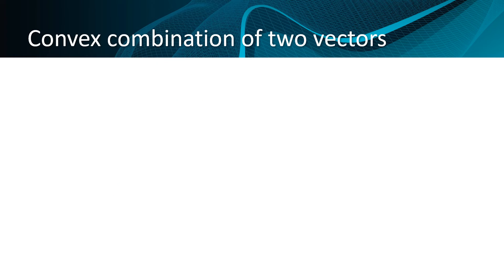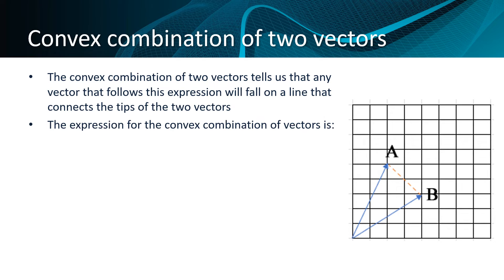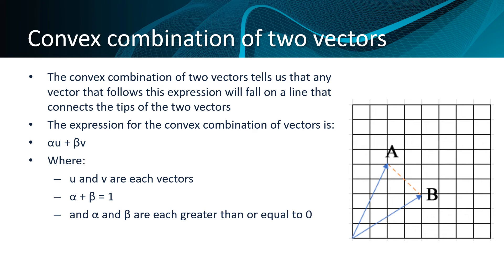The convex combination of two vectors tells us that any vector that follows this expression will fall on a line that connects the tip of the two vectors. The expression for the convex combination of vectors is alpha u plus beta v, where u and v are each vectors, and alpha and beta add to 1 and are each greater than or equal to 0.